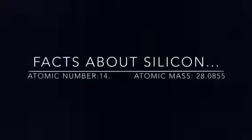Facts about silicon. Silicon's atomic number is 14 while its atomic mass is 28. Silicon was discovered in 1823 by Jans Jakob Berzelius.